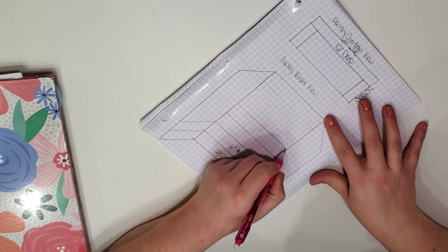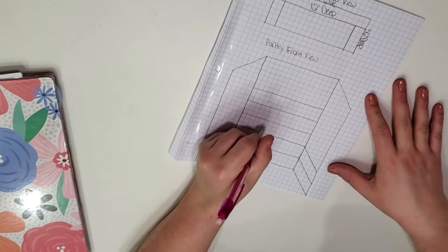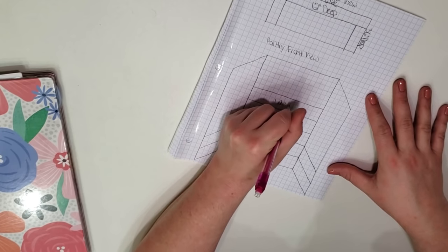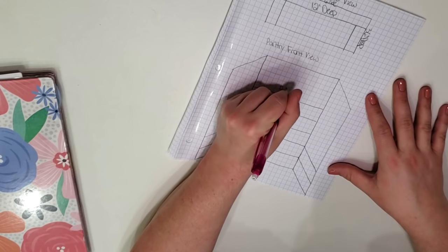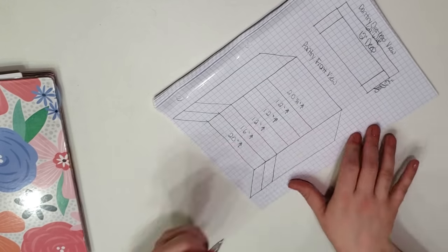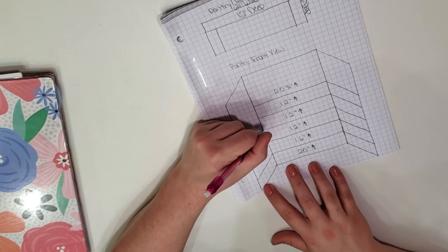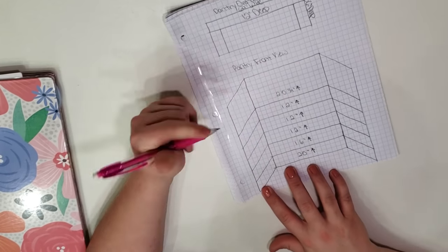When you're planning out your pantry and deciding how many shelves you can fit, don't forget to calculate for the thickness of the shelves themselves. I knew I would be using three quarter inch thick wood so I accounted for that when figuring out how much space I would have left at the very top of the pantry.